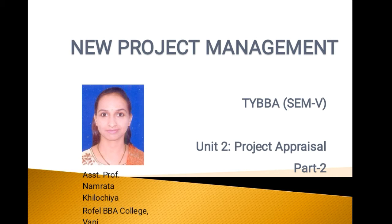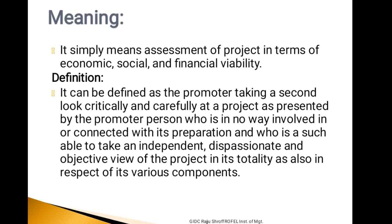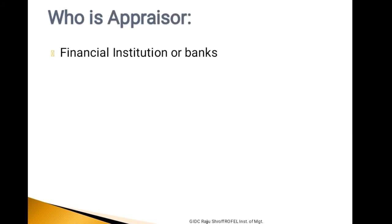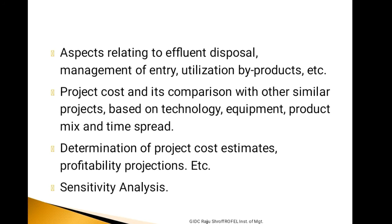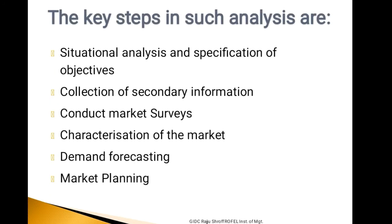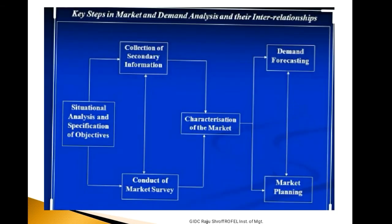Under that, part B, which contains Market Analysis. In this chapter, Market and Demand Analysis, we had discussed about the meaning of Market and Demand Analysis, as well as the fact that it is divided into 6 major steps, which we can see from this diagram. We had discussed stage number 1, that is Situational Analysis and Specification of the Objectives, and also discussed in the last e-session regarding Collection of Secondary Information, which includes Sources of Secondary Data. We had also discussed the Conduct of Market Survey, which includes 7 major steps in data collection at the primary level.